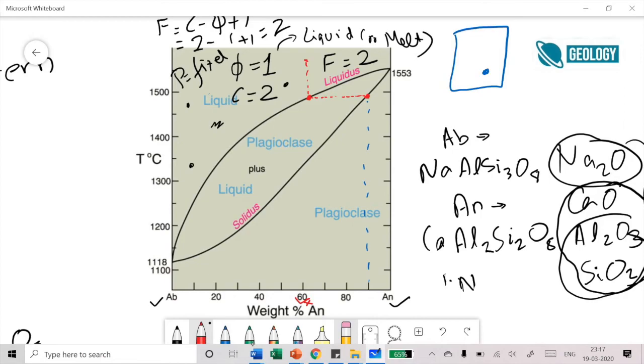Now we keep on continuing our cooling process. It cools to another temperature. At this lower temperature, you have a solid at this point near the solidus and you have a liquid here. So you have a liquid here and you have a solid here.